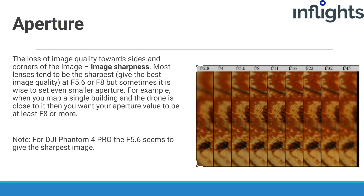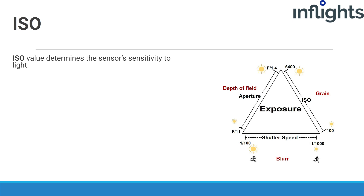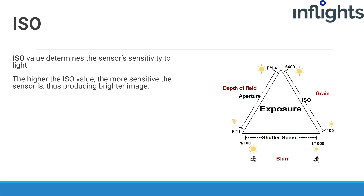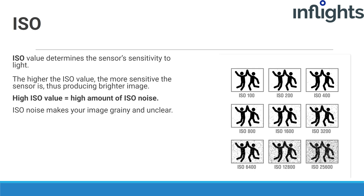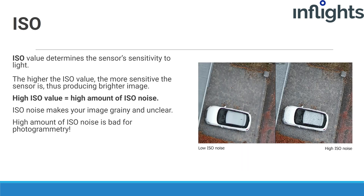For the DJI Phantom 4 Pro, f5.6 seems to give the sharpest image. ISO value determines the sensor's sensitivity to light. The higher the ISO value, the more sensitive the sensor, producing a brighter image. The downside to increasing ISO is ISO noise, which makes your image grainy and unclear. The higher the ISO value, the more noise is introduced. ISO noise is bad for photogrammetry. Also, the higher the ISO, the less dynamic range.